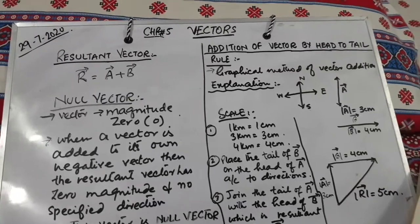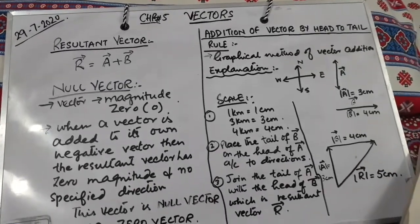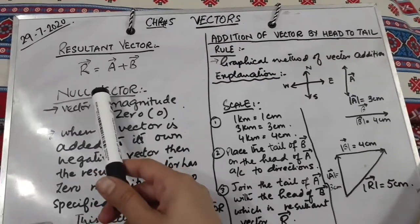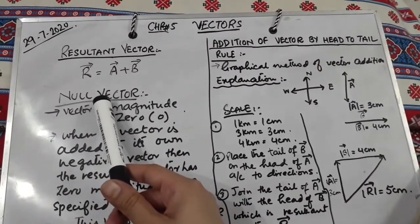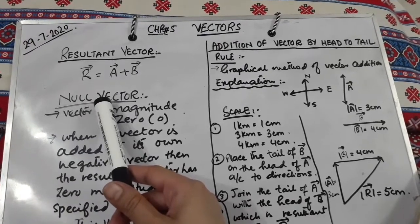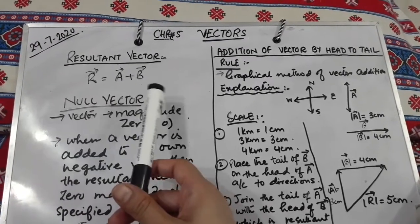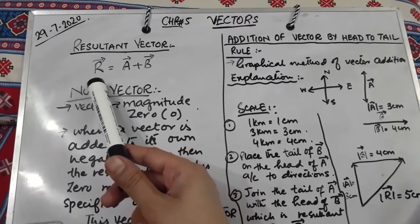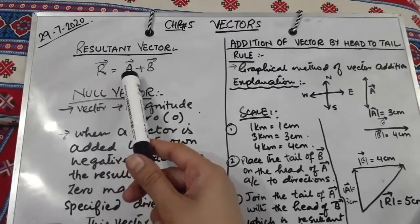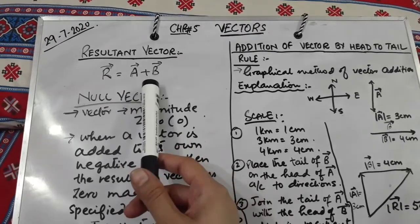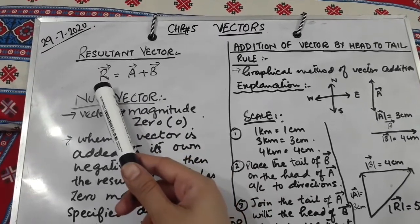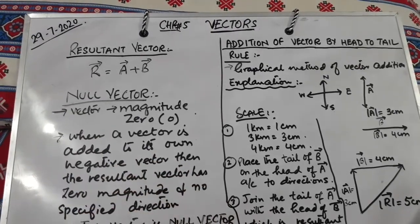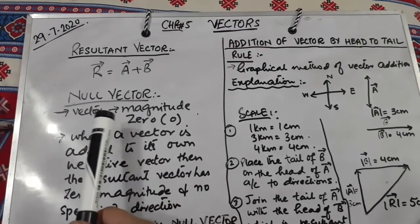Our next topic is resultant vector. A resultant vector is the addition of two or more vectors — their combined effect is known as the resultant vector. For example, if A and B are two vectors and we add them, we get vector R, which is called the resultant vector.